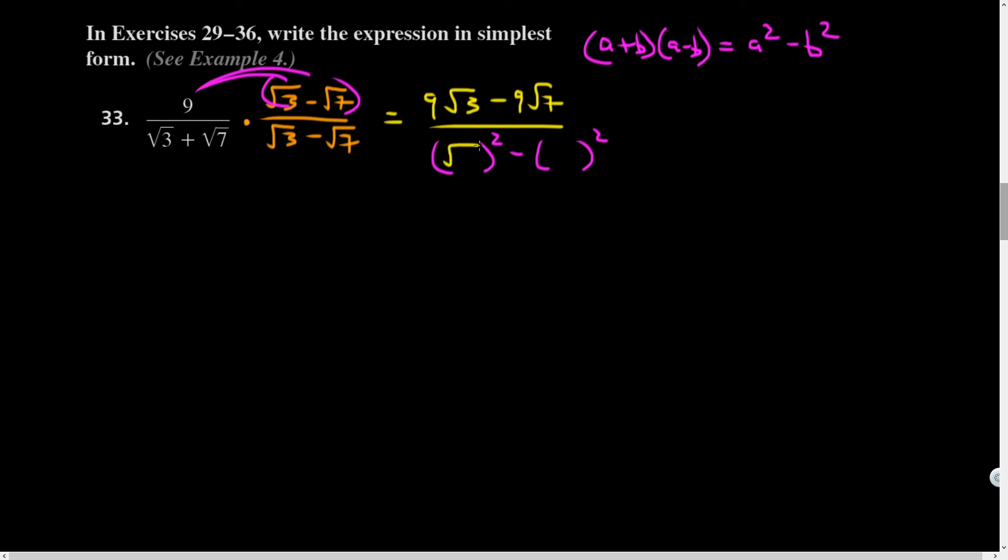And the reason the difference of squares pattern is so great is because everything is getting squared, right? A squared minus B squared here and squares kill square roots. So that's really the whole reason for this trick. And so let's plug that in. So the denominator is going to become three minus seven, which is equal to negative four. And you know what, if you're doing this on paper, I'm fine with ditto marks because you end up having to write the same thing over and over. So let's see nine rad three minus nine rad seven.